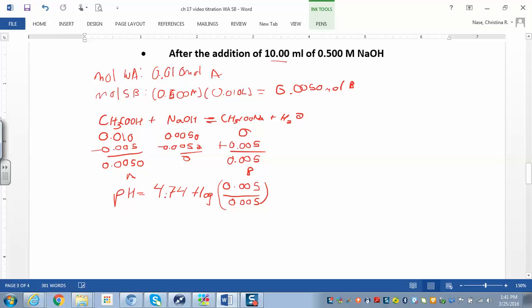This is the log of 1, which equals 0. So pH equals 4.74, which is a very special point.